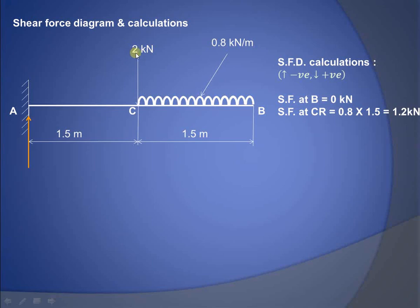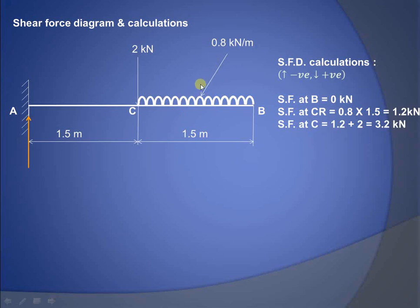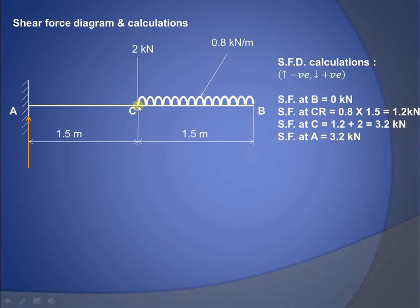The shear force at C-right is 0.8 multiplied by 1.5, because 0.8 kN/m over 1.5 meters gives the total UDL force acting from B up to just right of C. As it acts downward it is positive, giving 1.2 kN. Exactly at point C there is also the point load of 2 kN acting downward, so 1.2 plus 2 equals 3.2 kN.